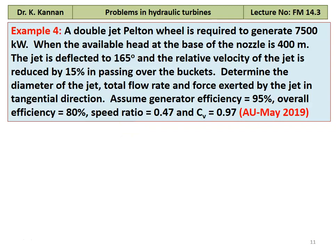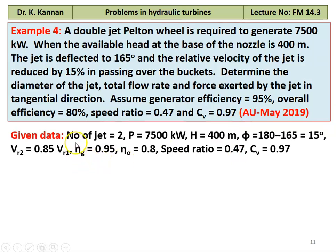Example number 4: A double-jet Pelton wheel generates 7500 kW with available head at the nozzle base = 400 m. The jet is deflected 165° and relative velocity is reduced by 15% over the bucket (Vr2 = 0.85 × Vr1). Determine the jet diameter, total flow rate, and tangential force. Generator efficiency = 95%, overall efficiency = 80%, speed ratio = 0.47, Cv = 0.97. This is from May 2019.